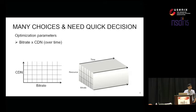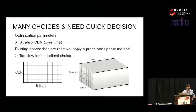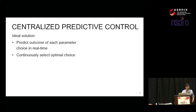The existing approaches to solve this problem are primarily reactive. They use a probe-and-update method — you try a bitrate, see how it works, and then decide to switch up, switch down, or probe multiple different resources and pick the one with the highest throughput. But these generally take a long time because of the number of different options to search. So the question is: what if we could predict the outcome, predict the optimal choice for every one of these options, and then continue to adapt as the prediction changes over time?